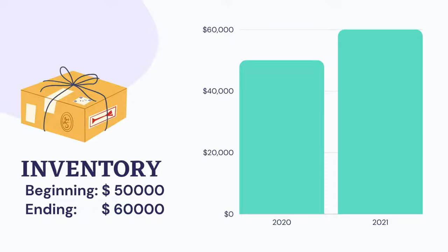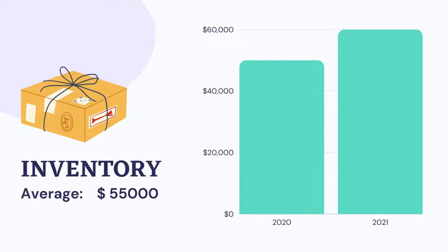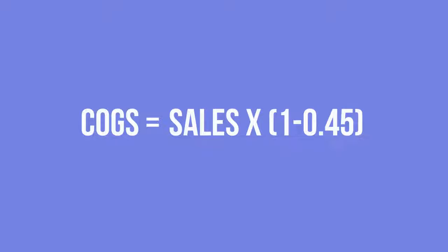The average inventory calculated will be $55,000. Cost of goods sold equals sales multiplied by 1 minus 0.45, because the margin was 45%. This gives us $68,750.